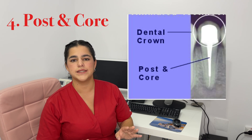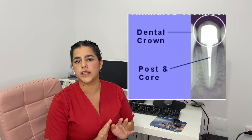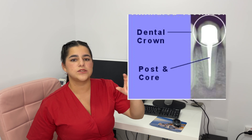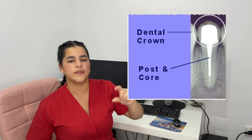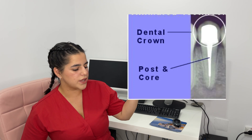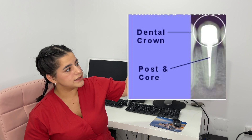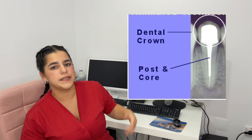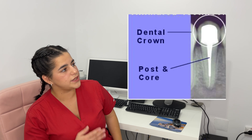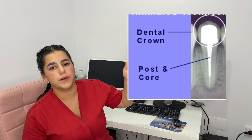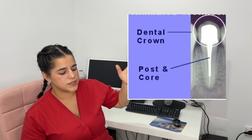When talking about post and core, before placing one we must ensure there is a proper endodontic treatment on the tooth. We always have to leave at least one third of the gutta-percha, and the two thirds are filled with the post and core. As you can see in this image, we have the dental crown and the post and core, with that little piece at the bottom being the gutta-percha left inside. This one is placed correctly — the tooth is intact and everything is fine.